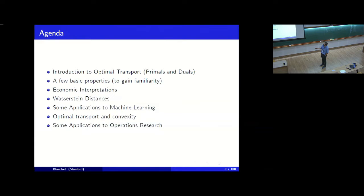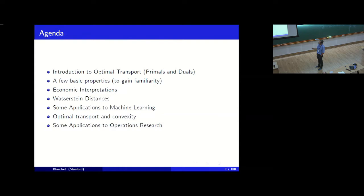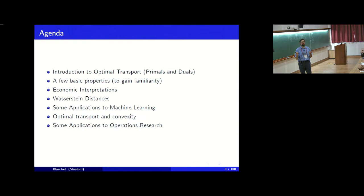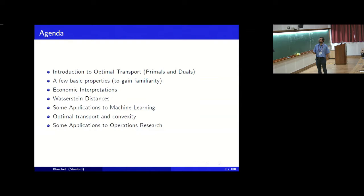I'm going to remind you what the program is and where I am. In the first lecture, we talked about the standard optimal transport problem—the primal problem and the dual problem—and gave an economic interpretation to the dual. We derived basic properties: if the cost function is a metric, then optimal transport recovers a metric called the Wasserstein distance. I mentioned briefly that Wasserstein distance recovers the total variation distance in the Prokhorov topology, the weak convergence topology.